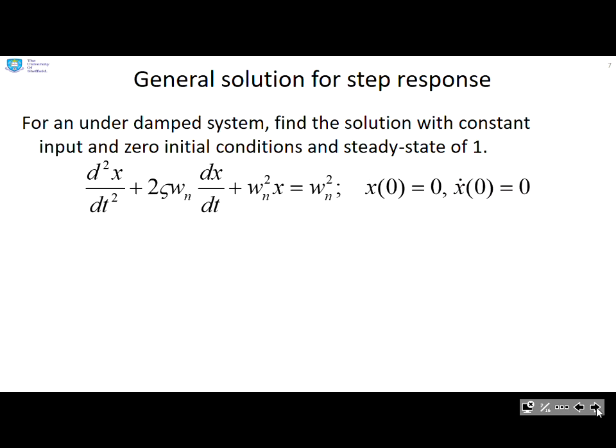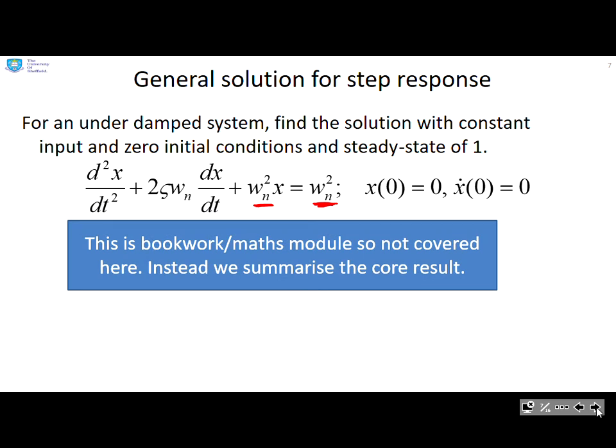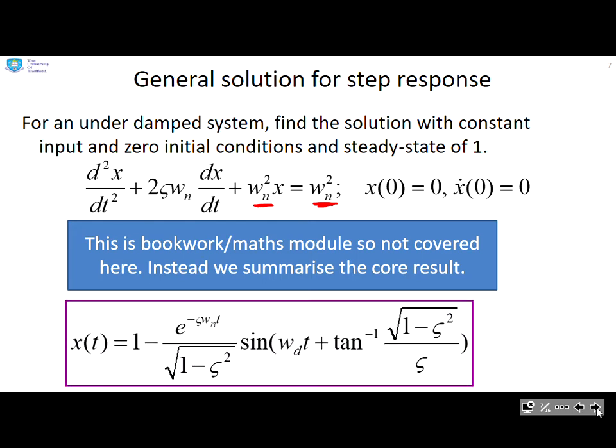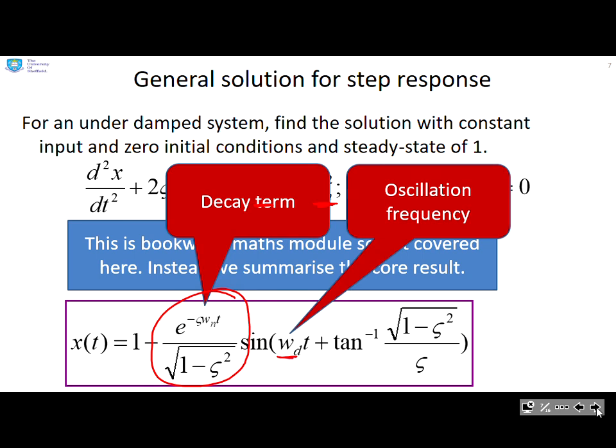For an underdamped system, find the solution with constant input and zero initial conditions and a steady state of 1. Now this is actually book work or something you might do in a maths module, so we're not going to derive it here but we're going to give you the core result. There's an exponential term here which gives you the decay rate - basically how fast do you converge. And then there's a sinusoidal term with this frequency ωd which tells you how fast you oscillate.